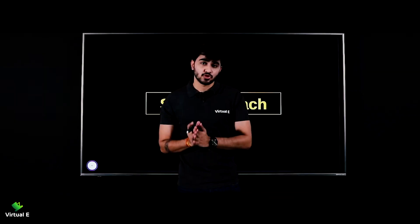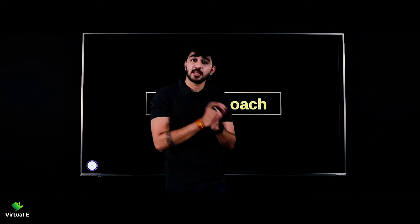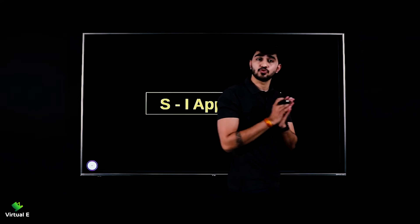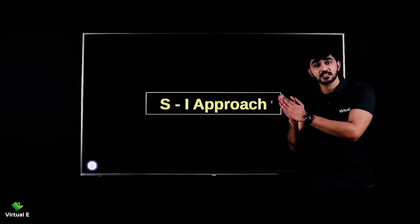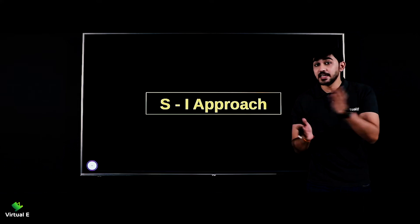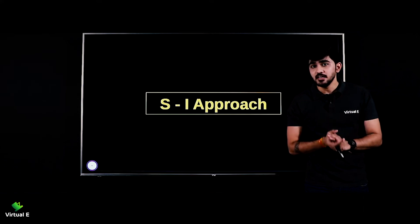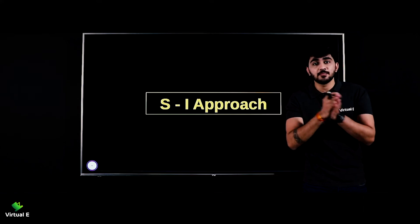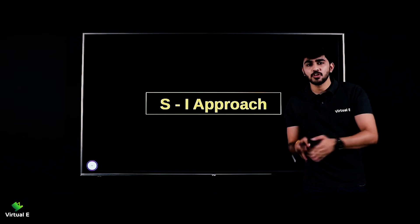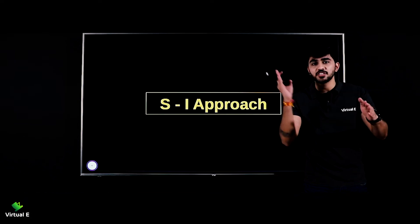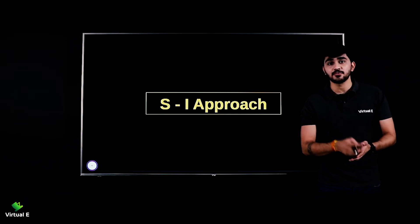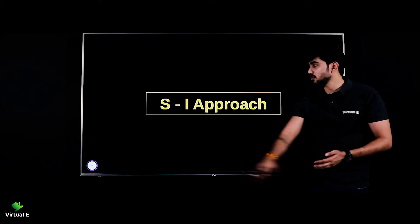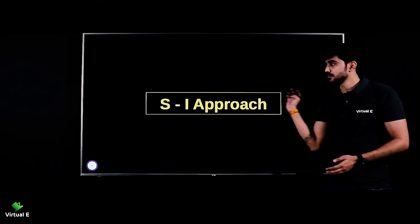The S and I approach - menopko pehle hi batata ki pehla approach to the other Keynesian, that was AD=AS approach. AD ga ga matlab tha C plus I, AS ka matlab tha C plus S. So if you cancel out C from both sides, you will be left with I and S - that is your S and I approach.